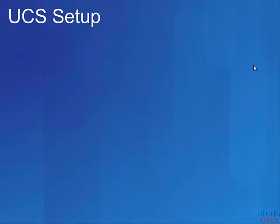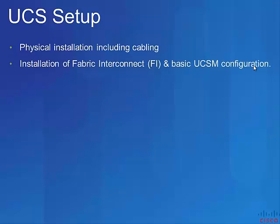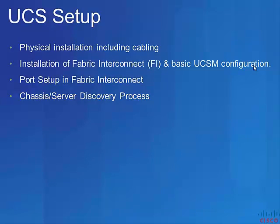The agenda of this video is to show you how you can quickly install Cisco UCS system including all the components. We will start from physical installation including cabling, then configure Cisco UCS Fabric Interconnect which also hosts UCS Manager. We will go through UCS Manager system configuration and then set up various ports in Fabric Interconnect such as server ports, storage ports and uplink ports. Once you configure those ports, all chassis and servers will start getting discovered automatically. I will explain to you the discovery process and how it works.